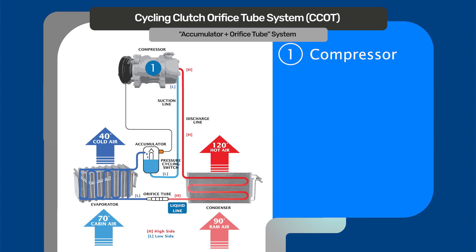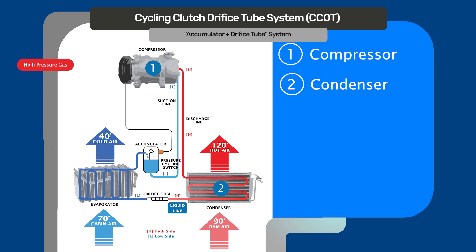You start the compressor, come out of the compressor through your discharge line — your hot, high pressure line. You go into your condenser, which is actually going to release heat from the refrigerant. It's going to cool it down and come out through the liquid line.